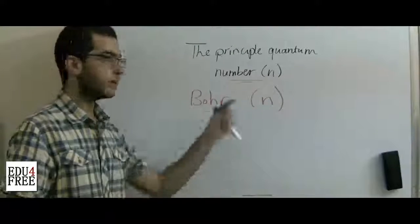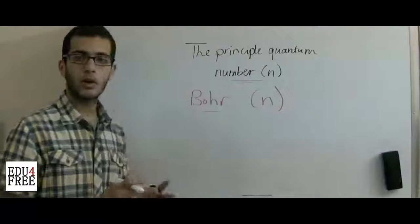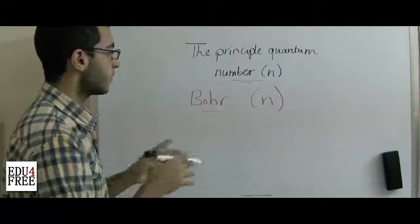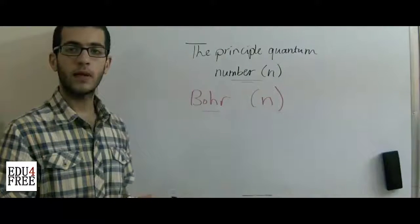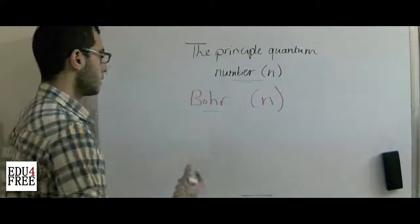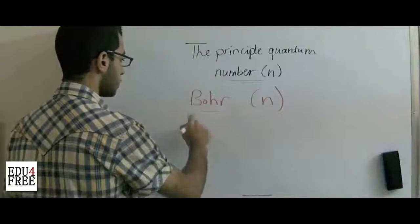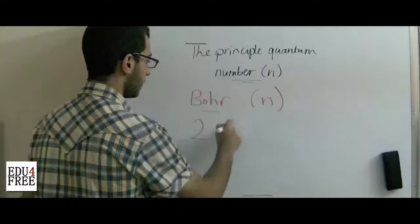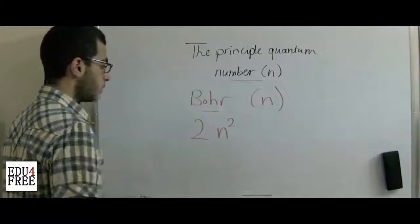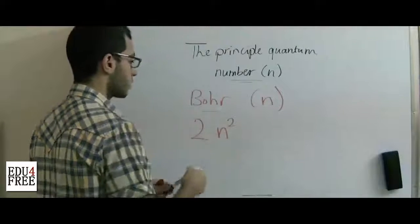The second use of the principal quantum number is to describe the maximum number of electrons that can be found in a certain energy level. This is determined using the formula: 2 multiplied by the principal quantum number squared, written as 2n².